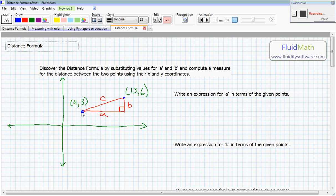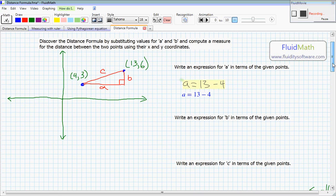So we have to write an expression for a in terms of the given points. This distance between here and here for the length of this side a, it's going to be thirteen minus four. So let's write that down. A is equal to thirteen minus four. Okay, scroll down a little here.